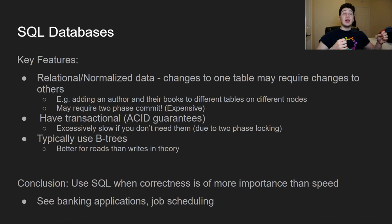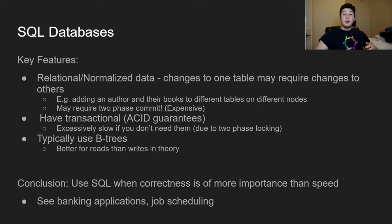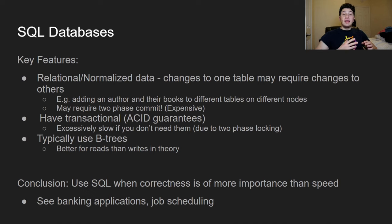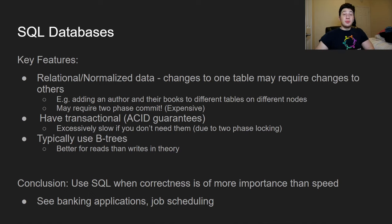A lot of times when doing writes you may have to write to multiple different tables, and if those tables are on multiple different nodes that can be a problem at scale. If you want to write to two different tables on two different computers and guarantee both succeed or both fail, you would need something like a two-phase commit protocol. Distributed transactions are pretty unreasonable in practice — they are very expensive — so SQL databases can be hard to scale in that regard.